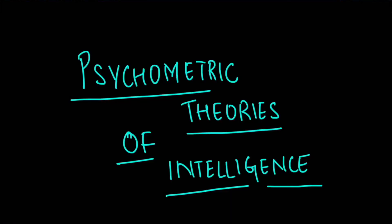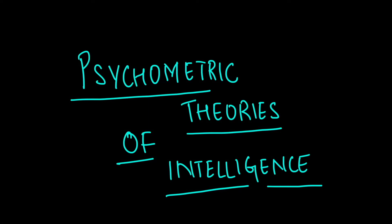In this video we will be covering the psychometric theories of intelligence. As discussed in the last lecture, there are two broad approaches to understanding intelligence: the psychometric approach versus the information processing approach. In this video we will start with the very first theory that falls under the psychometric approach.